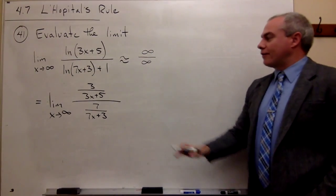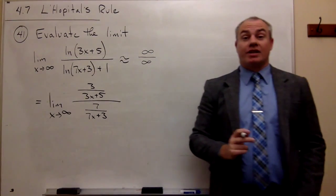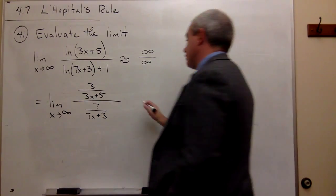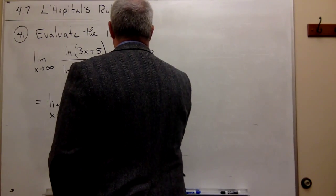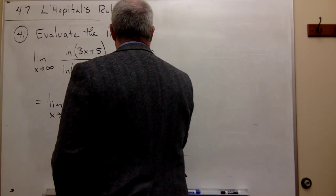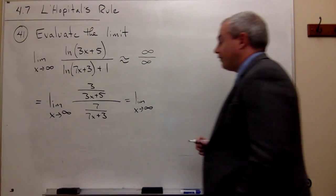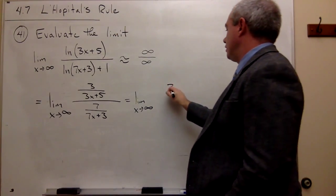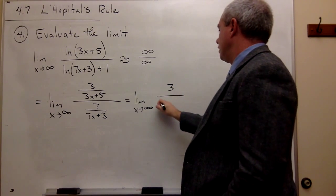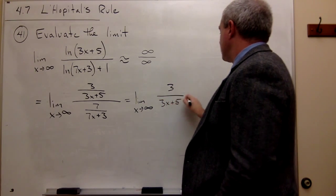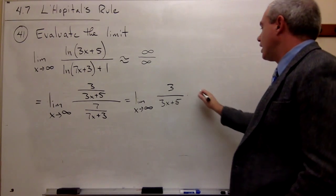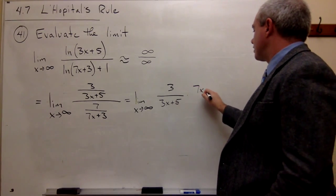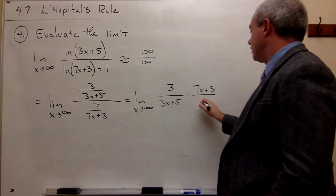Okay, we have a fraction divided by a fraction, so we can simplify this a little bit and rewrite. So let's do that real quick. So this is the limit as x goes to infinity of 3 divided by 3x plus 5 times 7x plus 3 divided by 7.